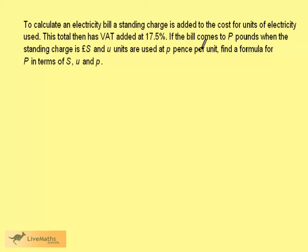If the bill comes to capital P pounds when the standing charge is S pounds and U units are used at p pence per unit, find a formula for P in terms of S, U, and p.